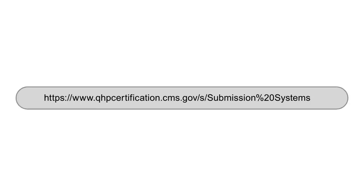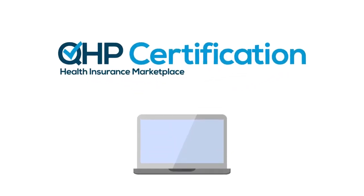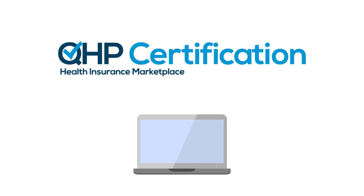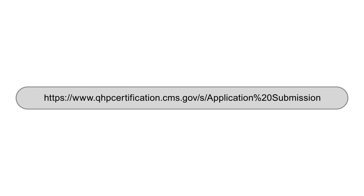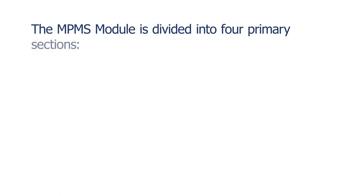For more information on submission systems issuers use to submit QHP application materials, including guidance on how to access those systems, visit the Submission Systems webpage of the QHP Certification website. For more information on which submission systems issuers in different state exchange models use to submit each QHP application material, reference the QHP Certification Issuer Toolkit posted on the Application Submission webpage of the QHP Certification website.